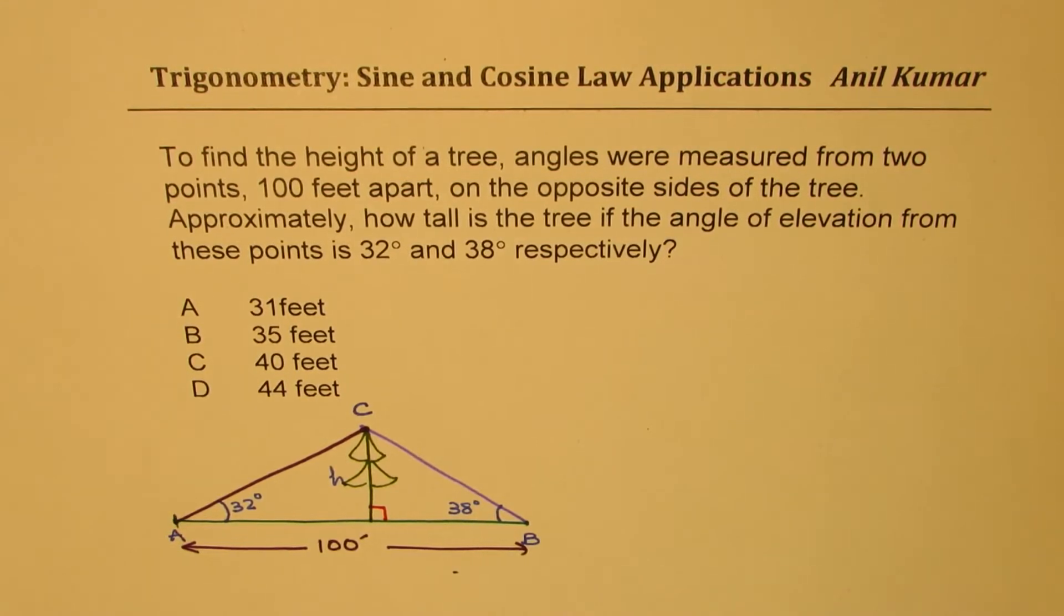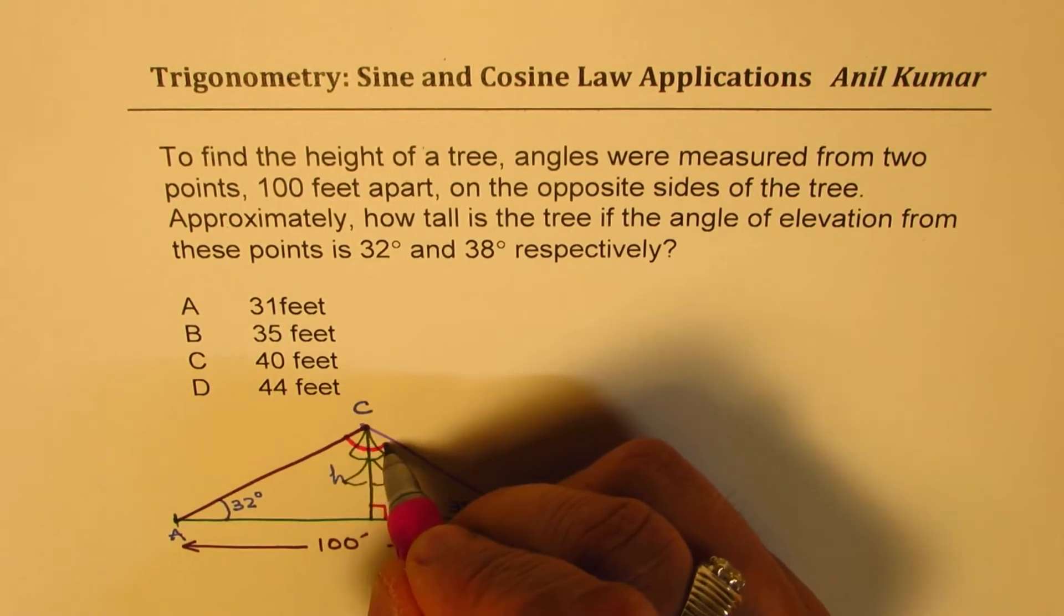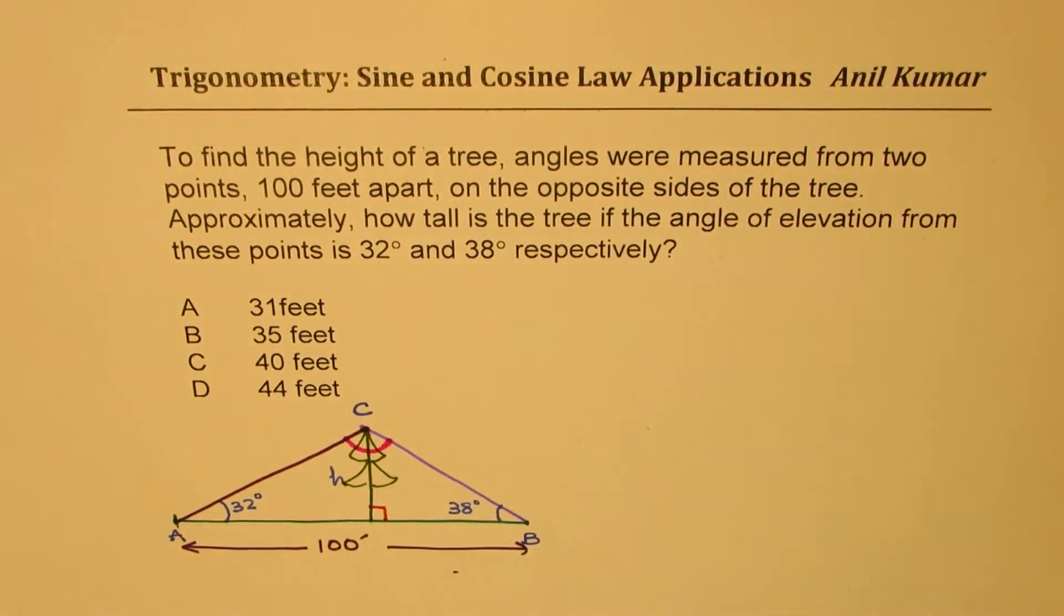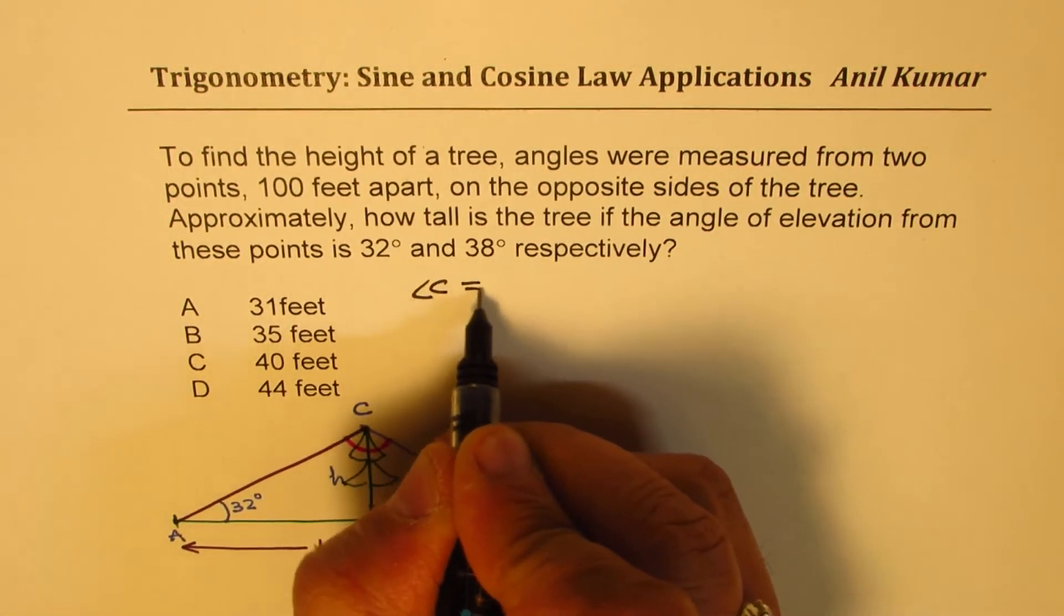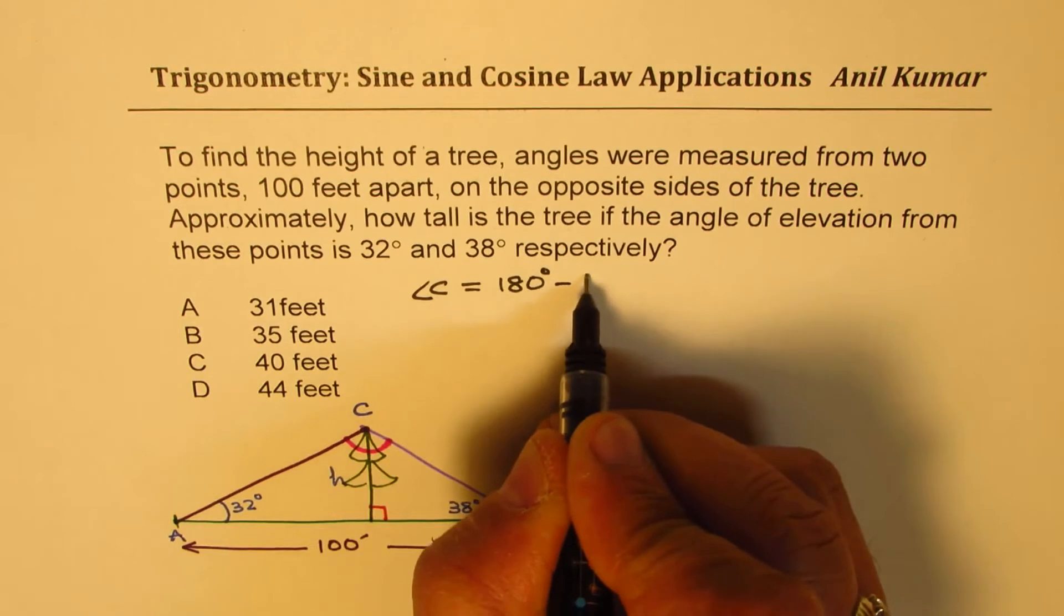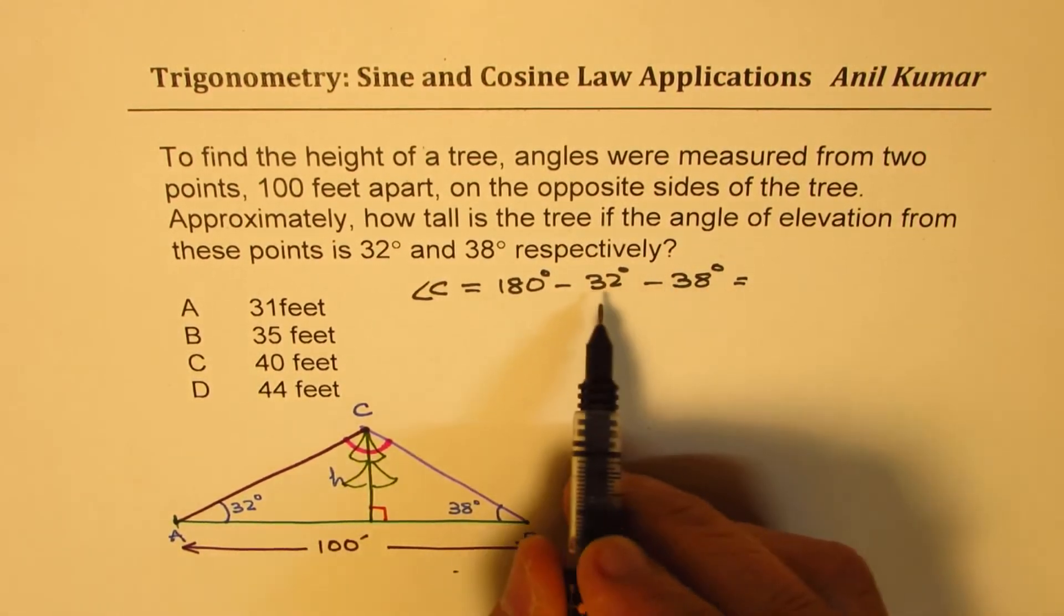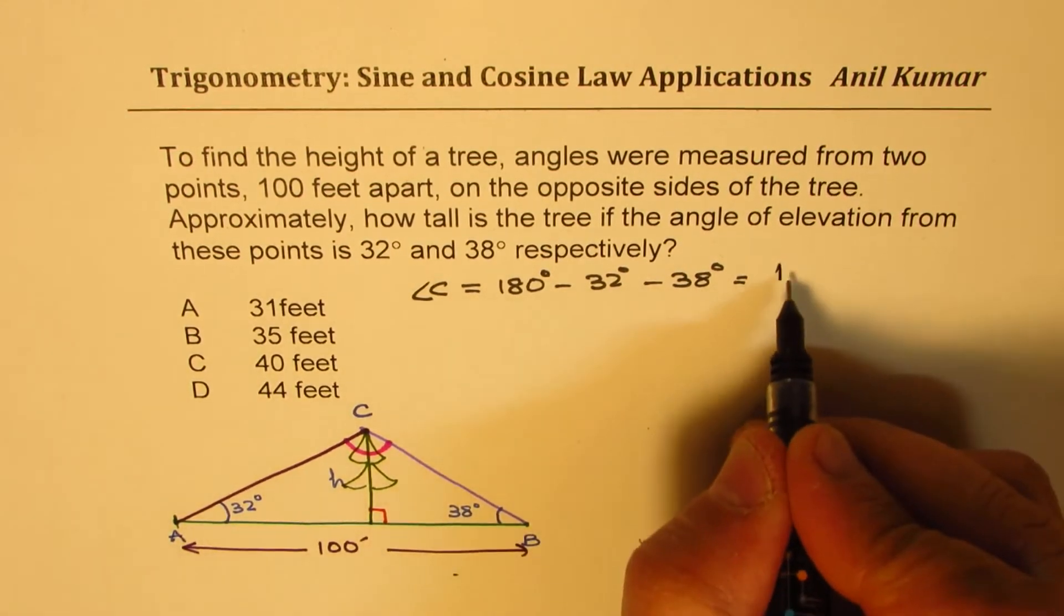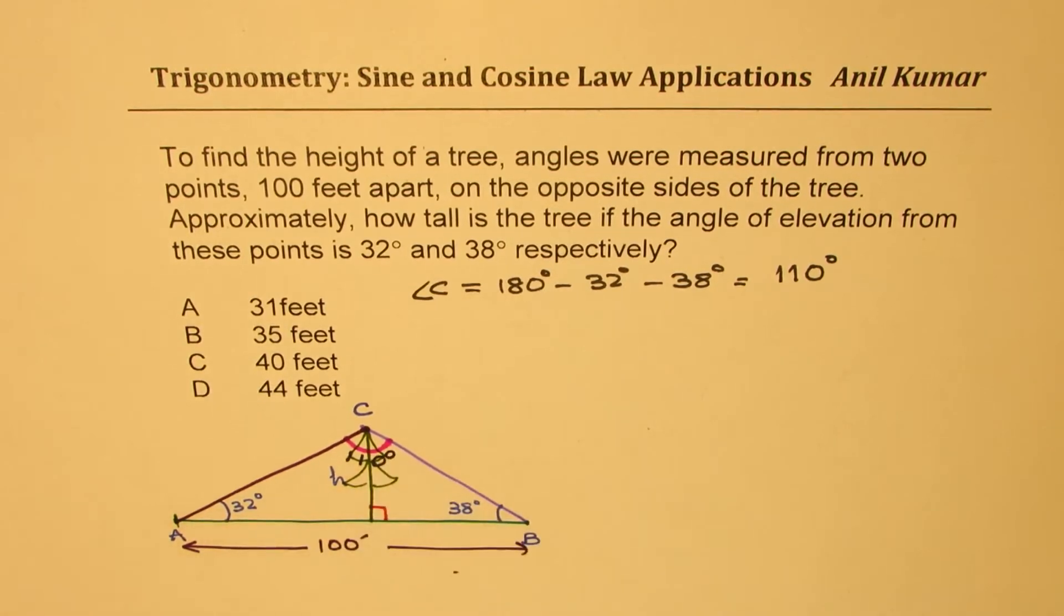However, we are going to use sine and cosine law. So let's first find what this angle C is. We are given two angles, let's find the third angle, and this third angle is also opposite 100 feet, so we can now use sine law. Let's find angle C which is equal to 180 degrees take away 32 degrees, take away 38. That means 70 degrees, so we are left with 110 degrees. So this angle is 110 degrees. Now we can use sine law.